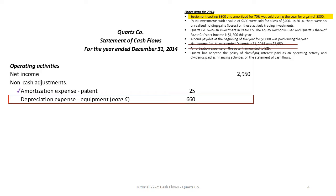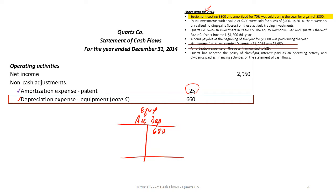After amortization expense, we have depreciation expense. Because this problem doesn't give us an income statement — it gives us other data — we can't just look at the balance sheet to find depreciation expense. We have to reconstruct the accumulated depreciation account for equipment. The beginning balance is $680 and the ending balance is $920, and the depreciation expense will be the plug figure.